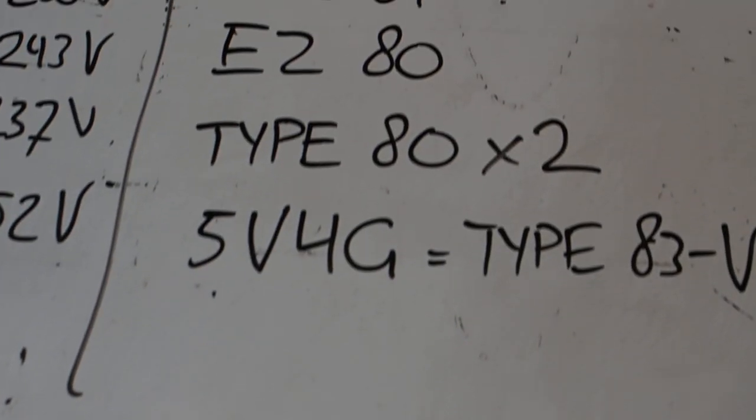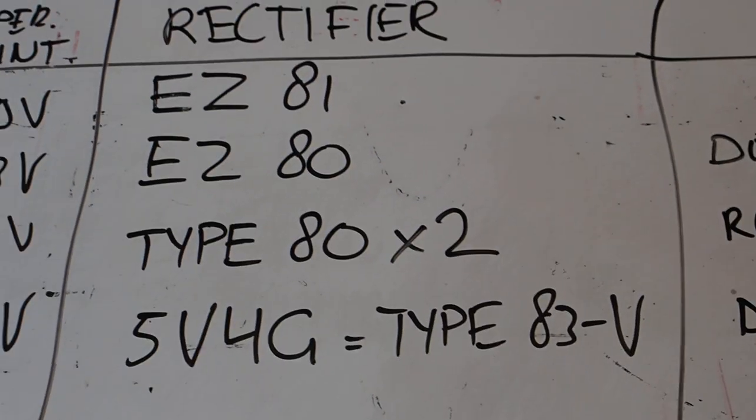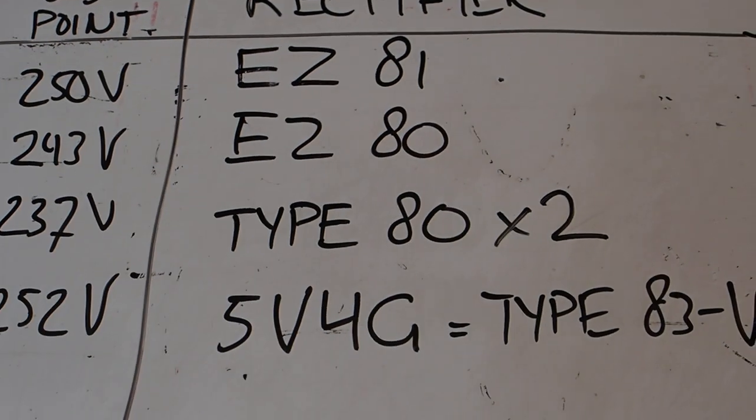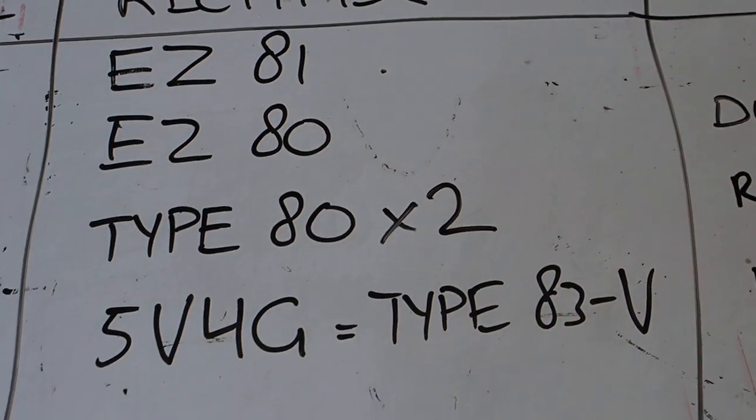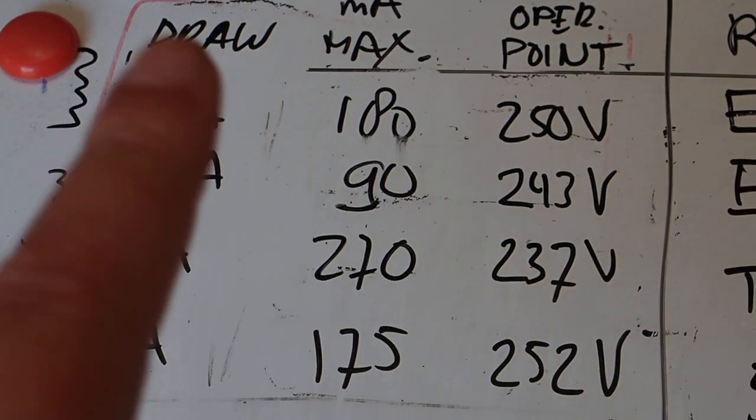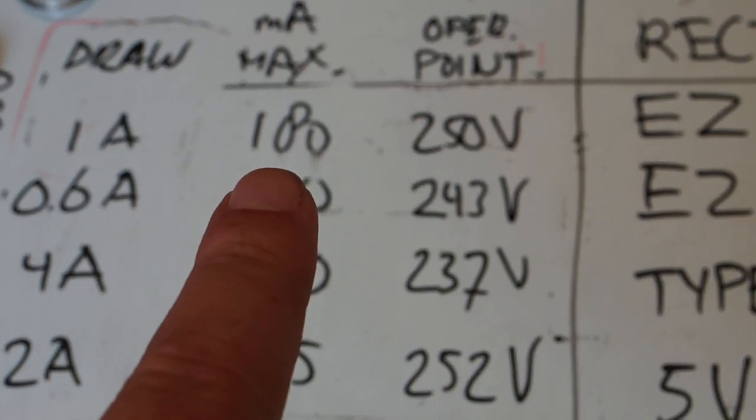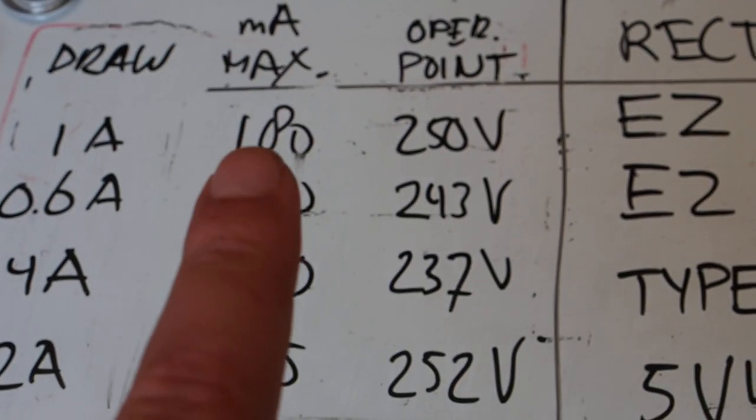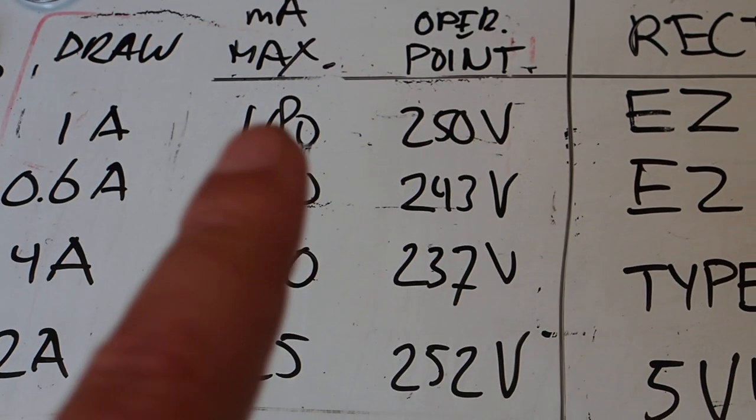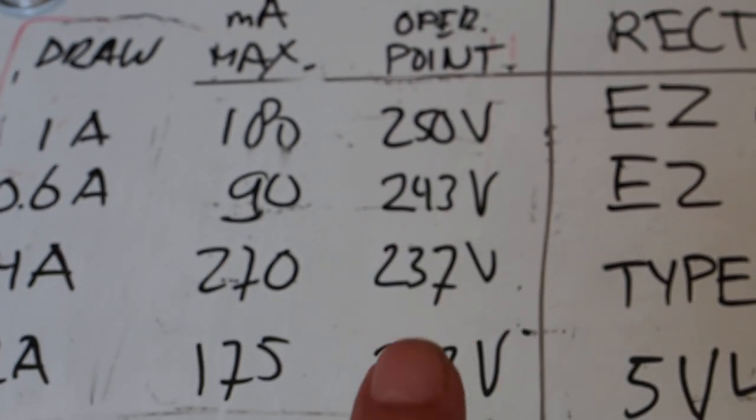Now which four tubes? These are the ones, and I tried them in this order. So I started out with the EZ81, so that is a quite small but reasonably low voltage drop rectifier. It draws one amp at 6.3 volts, it can maximally conduct 180 milliamps. Now my amp draws around I would say 70 milliamps as constant draw and the operating point of my tubes was at 250.